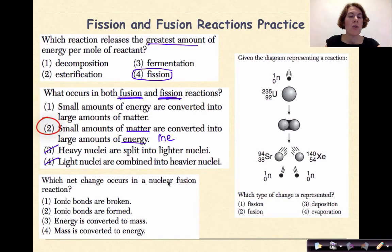Which net change occurs in a nuclear fusion reaction? Ionic bonds are broken. Ionic bonds are formed. Energy is converted into mass. Mass is converted into energy. The first two deal with chemical bonding, so those are out. The other two is just making sure that you know that it's always going to be mass is converted into energy. So again, if you think M-E, the M comes before the E, so matter into energy, which makes the right answer here number four.